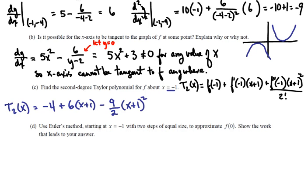In Part D, we want to use Euler's method, starting at x equals negative 1, with two steps of equal size to approximate f of 0.